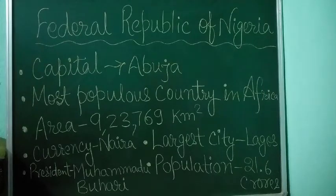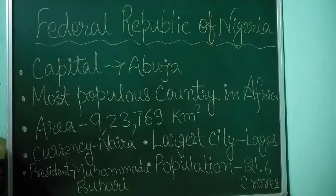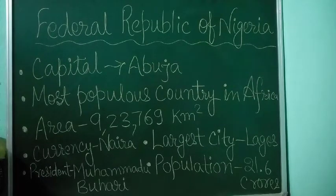Namaskar, welcome all of you in Science and Study Zone. Today we will study about Nigeria. Nigeria, officially called the Federal Republic of Nigeria, is a country in Western Africa. It is the most populous country in Africa, covering an area of 923,769 square kilometers with a population of over 216 million.